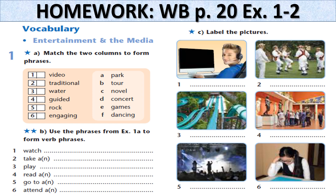Что будет у нас? Далее. Guided. Rock. Engaging. Теперь, во второй части, используете эти словосочетания для того, чтобы формировать полноценное словосочетание — то есть которое состоит из глагола и из имён существительных. Watch — например, что можно посмотреть? Take a — что можно делать? Play — что можно играть? То, что вы образовали словосочетание, используете теперь для того, чтобы образовать целую фразу. Next task. Label the pictures. Потом вот этими фразами называете здесь картинки — что там показано на картинках.